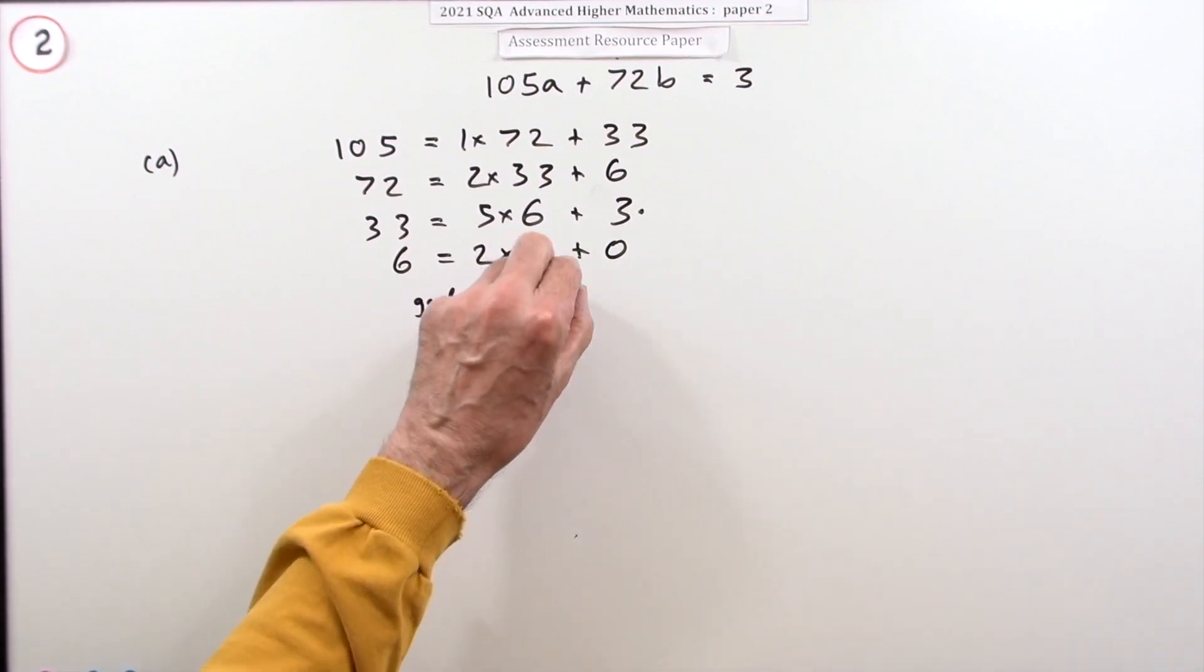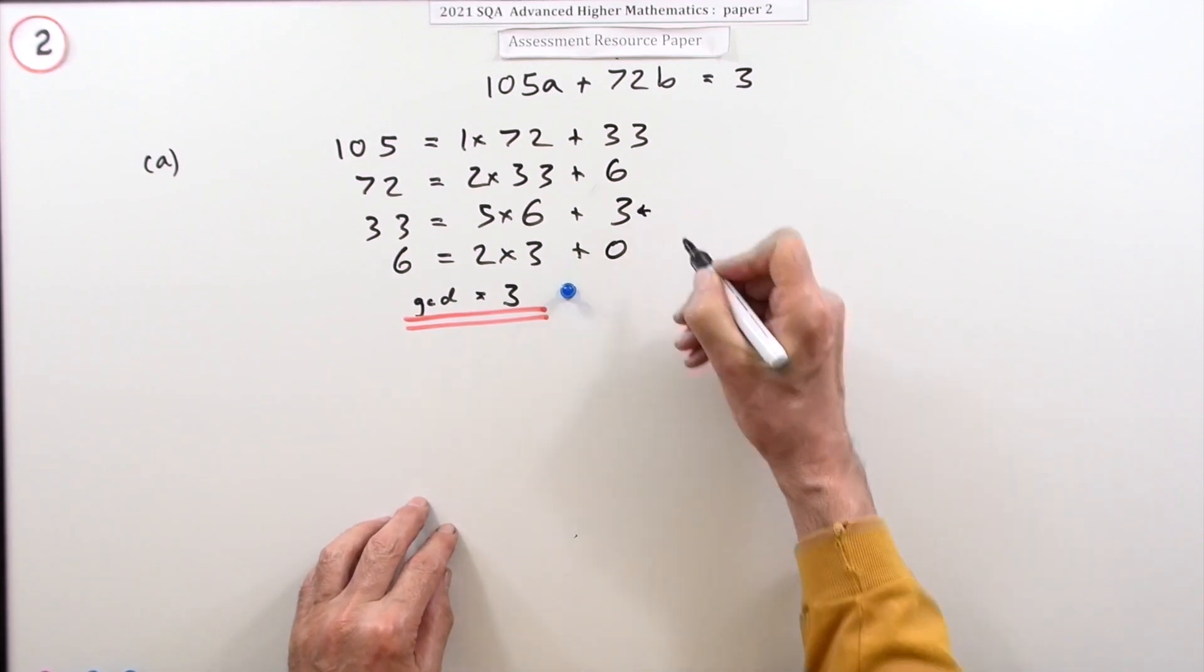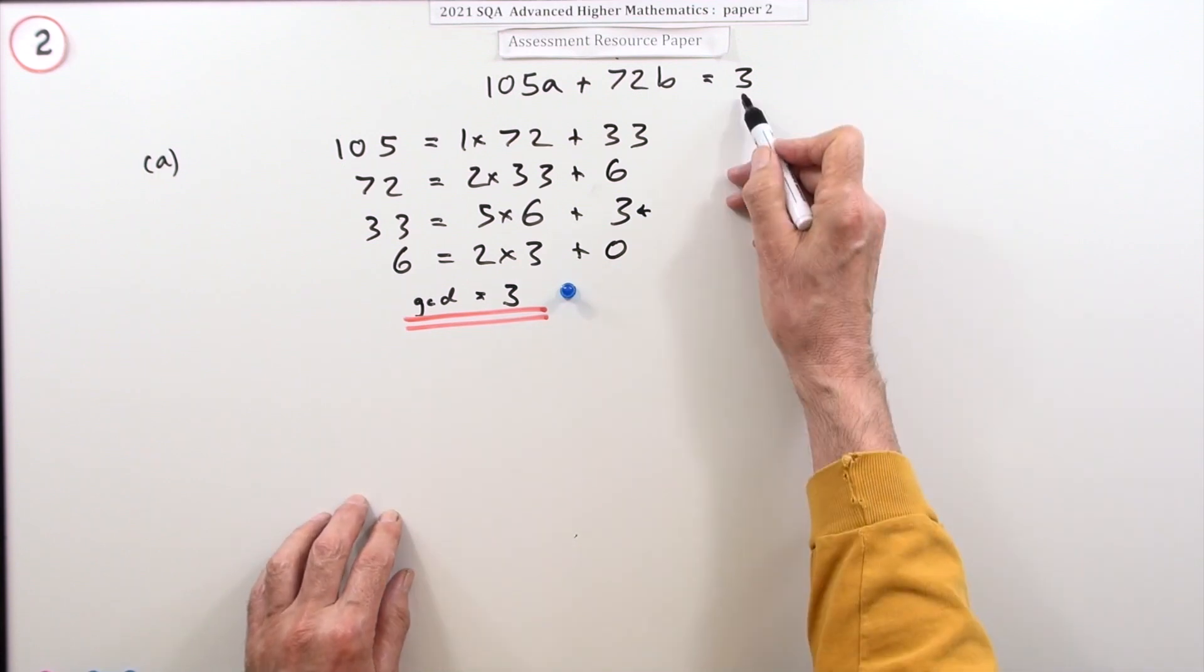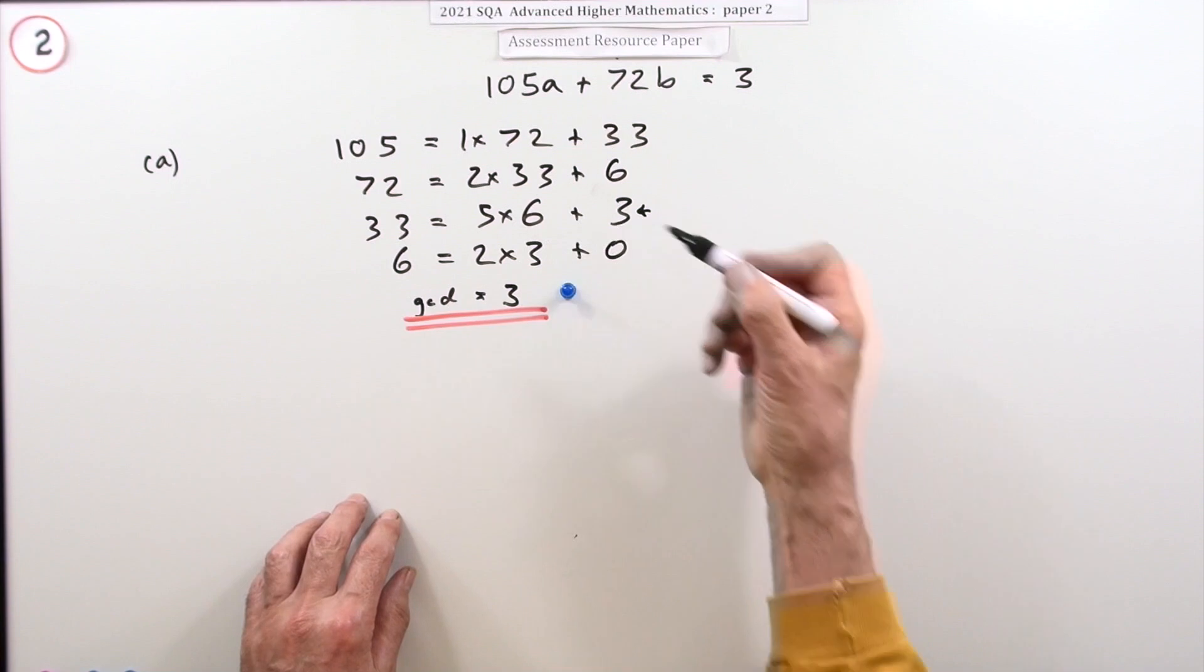That's the first mark. Now I have to go through it backwards, and that's why I indicated this line here, because that's the greatest common divisor. I want to construct three by using 105s and 72s.